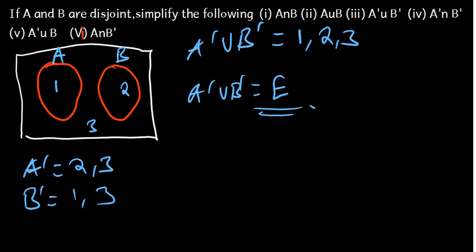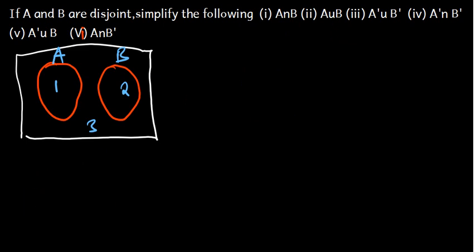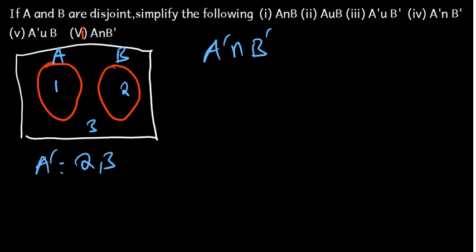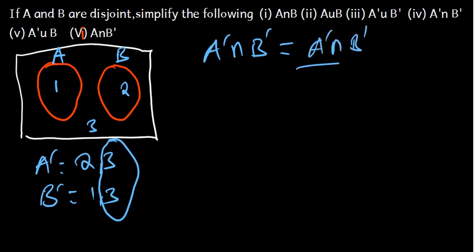Part 4 is A complement intersection B complement. A complement is {2, 3} and B complement is {1, 3}. We want the numbers found in both A complement and B complement. As we can see, only 3 is common to both, so A complement intersection B complement equals {3}.